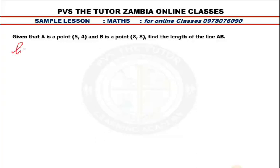So I'll say the length of line AB is given by the square root of the change in X. So, let's say X2 minus X1, then we square that.